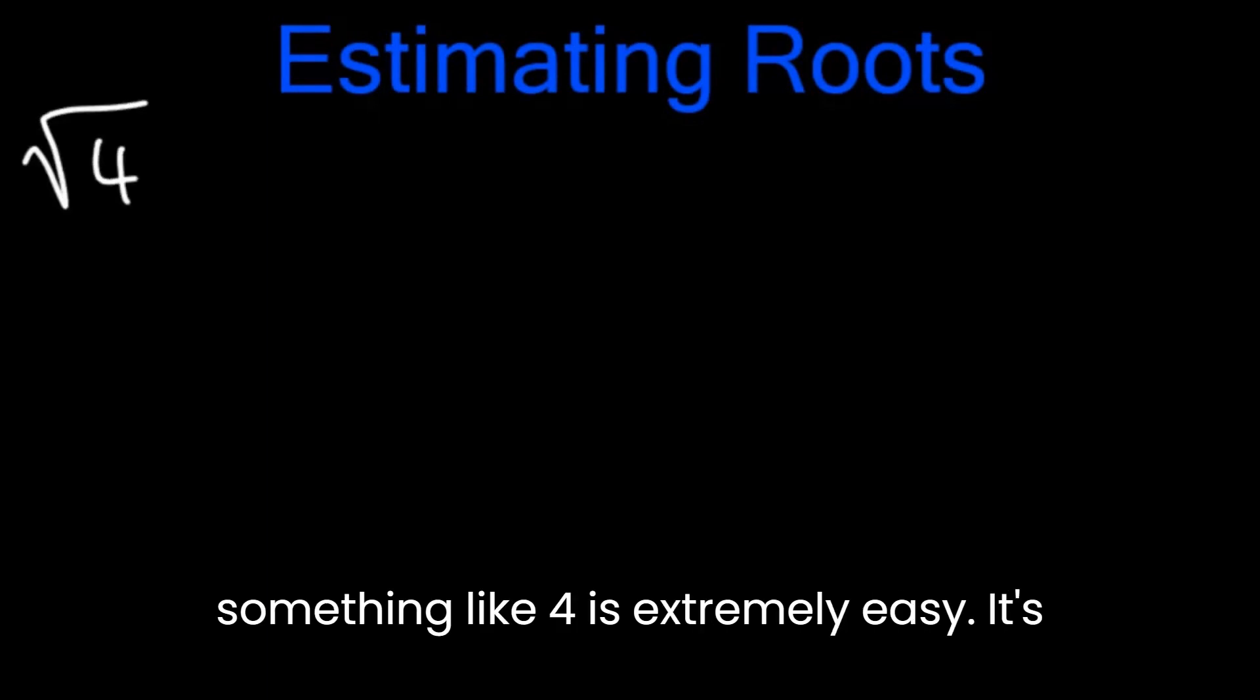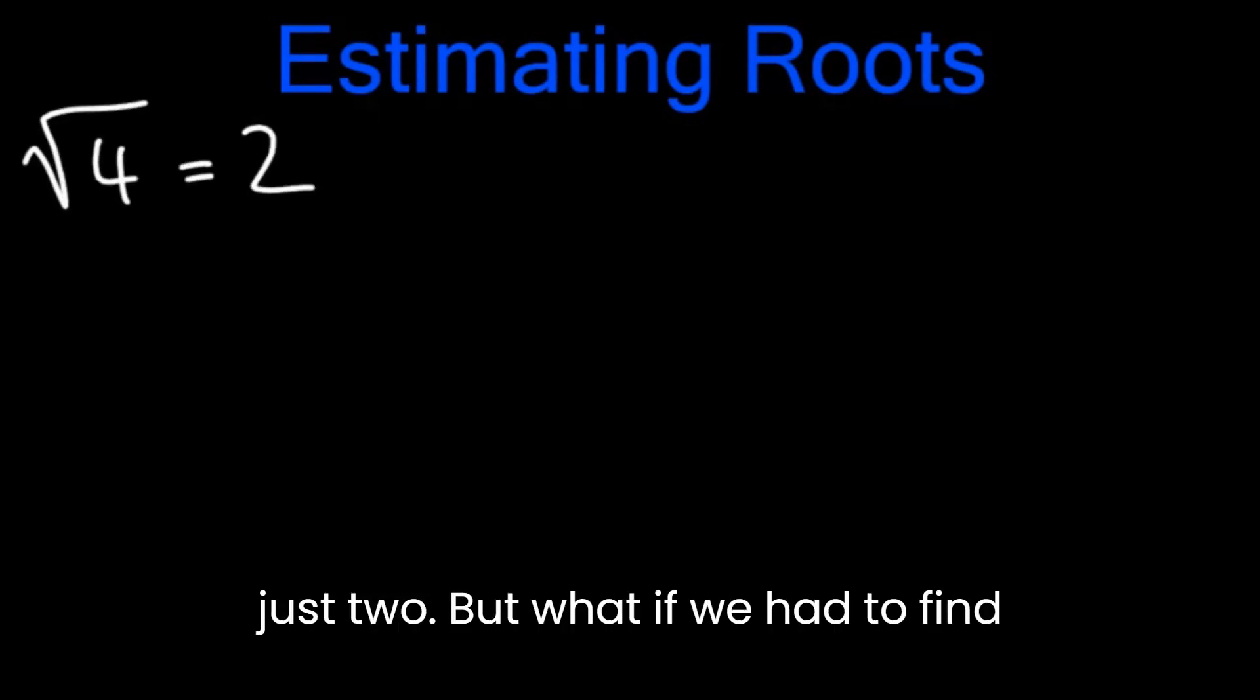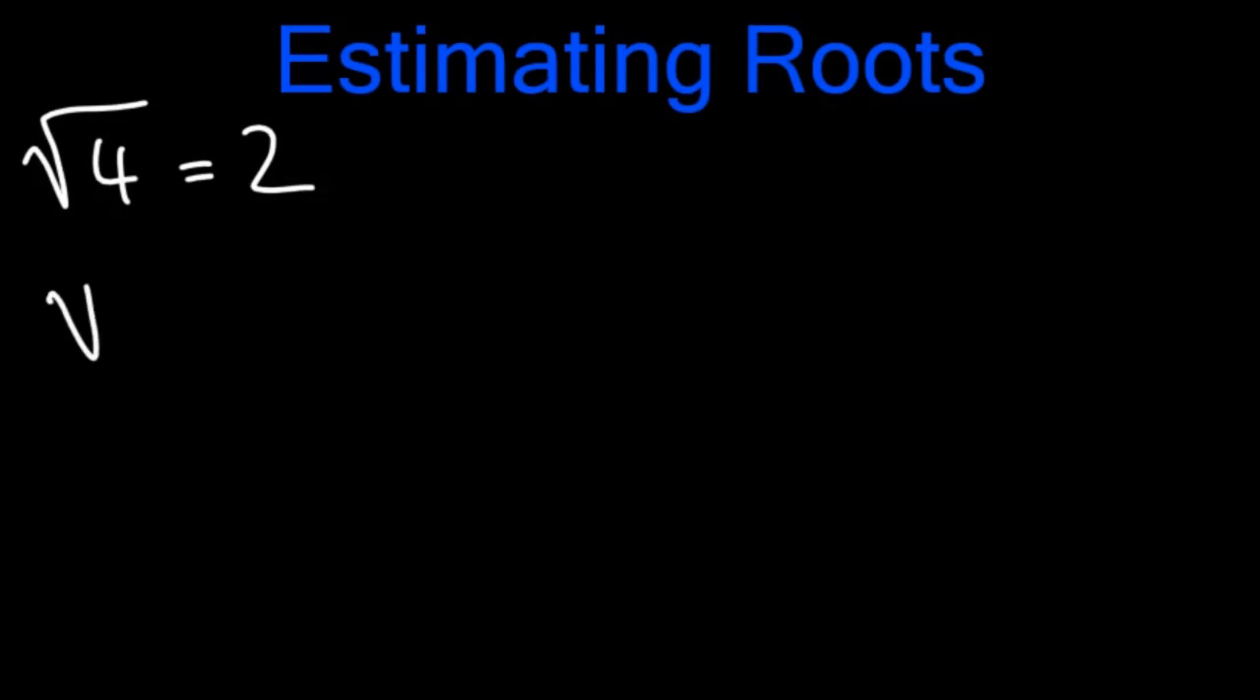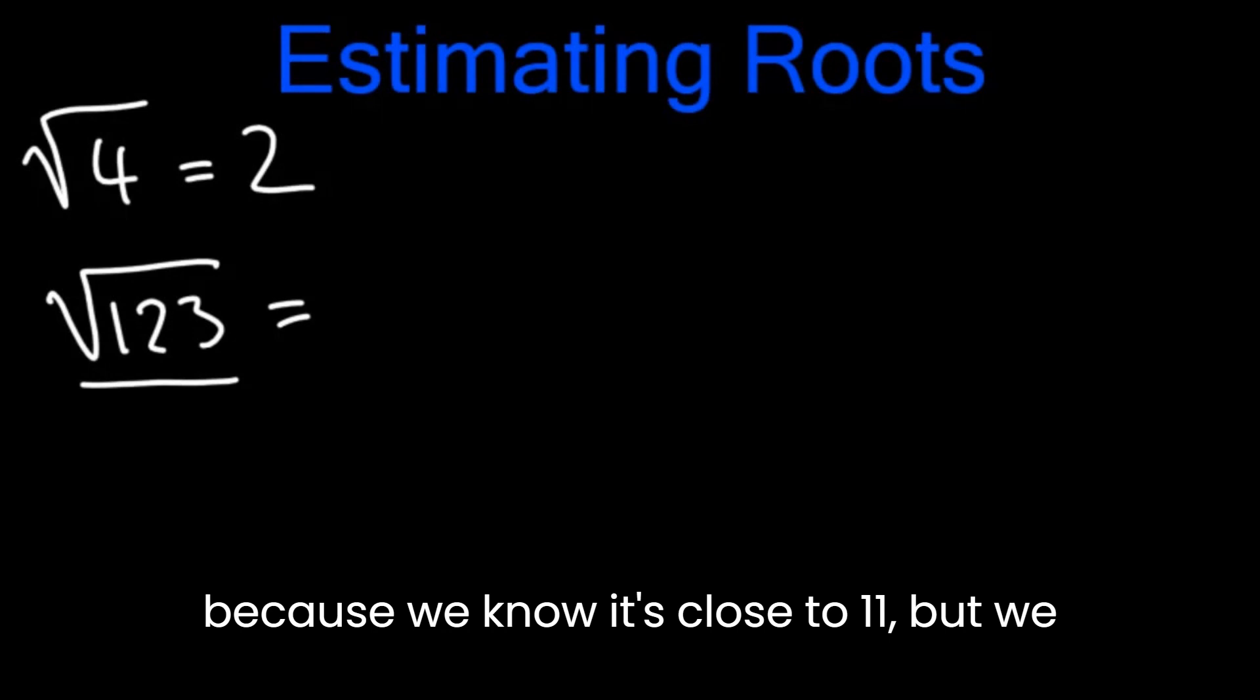Finding the square root of something like 4 is extremely easy. It's just 2. But what if we had to find the square root of 123? This is really hard because we know it's close to 11, but we don't actually know what it might be.